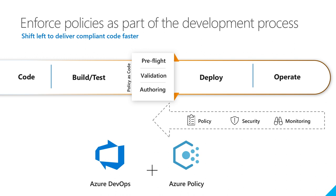Everything is code now — we even have infrastructure as code. When you're developing your ARM template for the deployment of your environment, it's all included in this cycle. Everything is becoming software — when you want to deploy your virtual machine or your network, it's all software. So at some point you'll use an automation tool, and the idea is to automate as much as possible to apply different quality gates in your process to confirm that compliance has not been compromised.